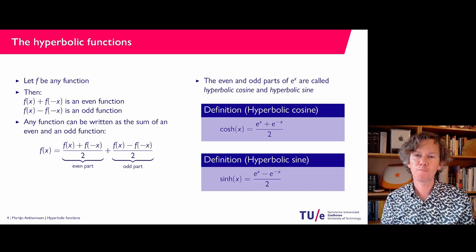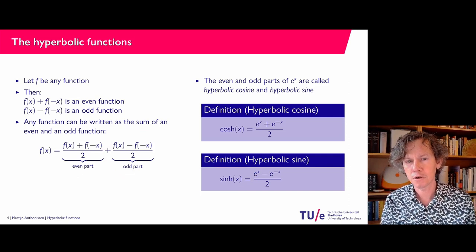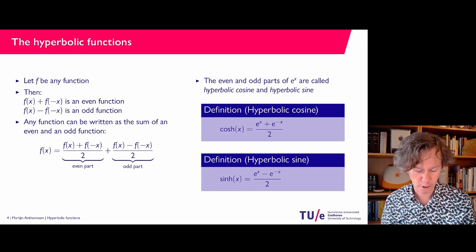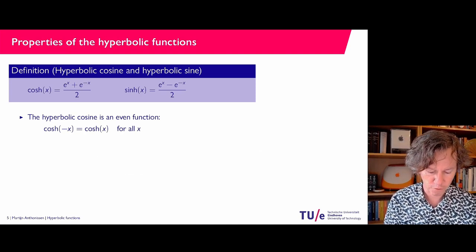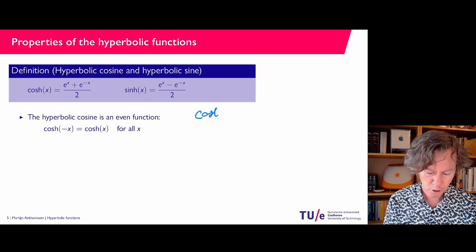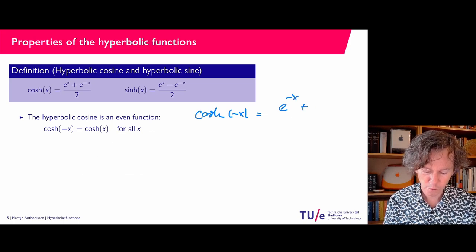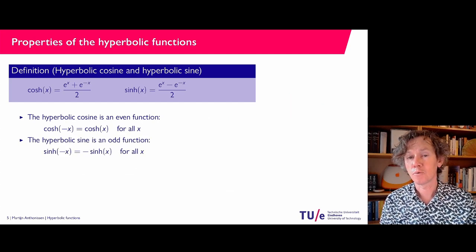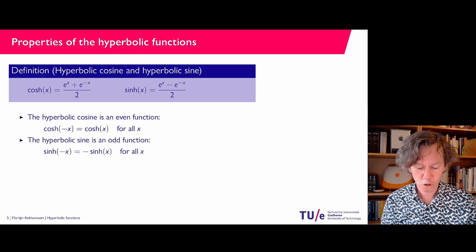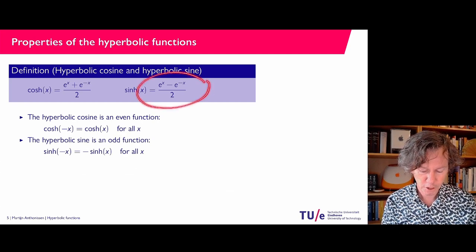Let's look at some properties of cosine hyperbolic and sine hyperbolic, because they are somewhat similar to what we have seen for cosine and sine. Cosine hyperbolic is an even function — you can easily check this, because cosine hyperbolic of minus x equals e to the power minus x plus e to the power x over 2, which is precisely cosine hyperbolic x. Similarly, sine hyperbolic is odd — just plug in minus x into its definition.